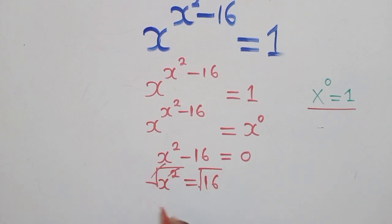This and this will cancel, will remain with x, is equal to positive or negative 4.